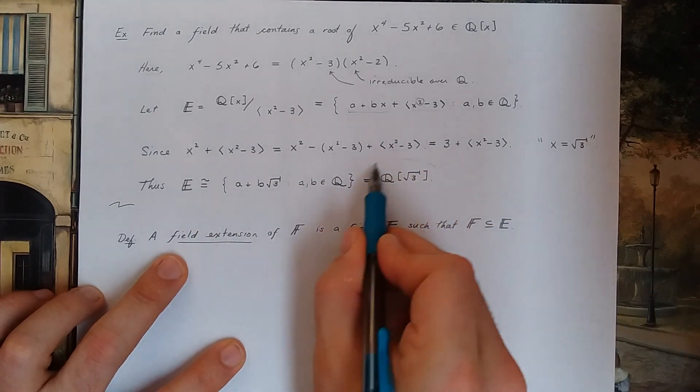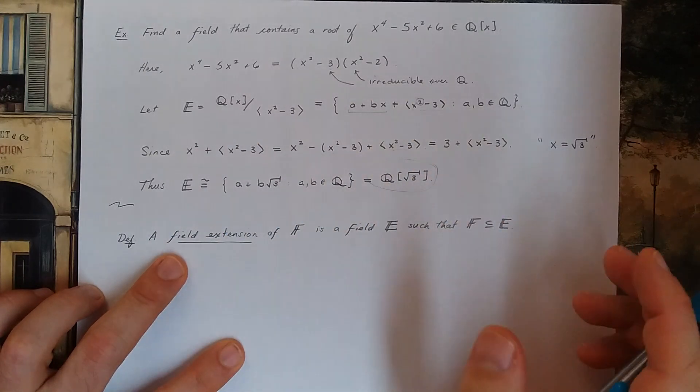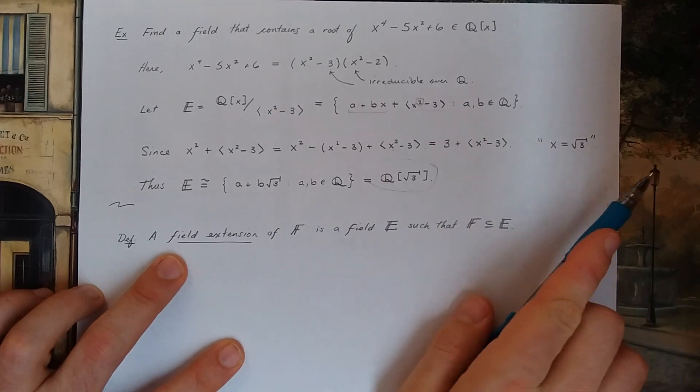So I would say that this field Q adjoin root 3 is a field extension of Q. All right, wonderful.